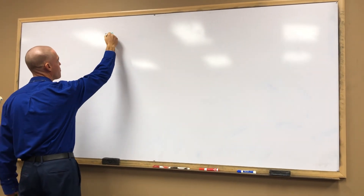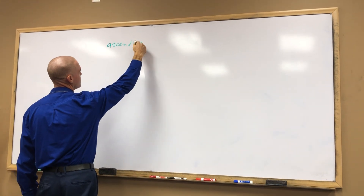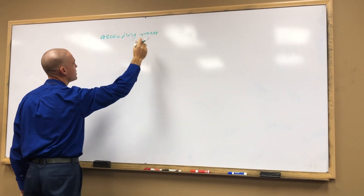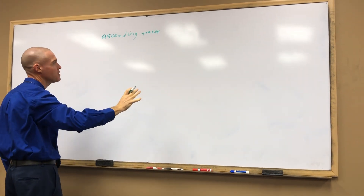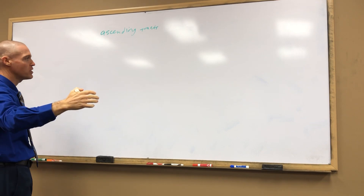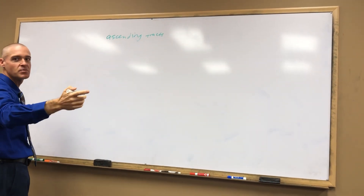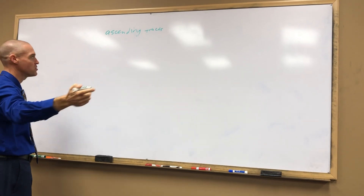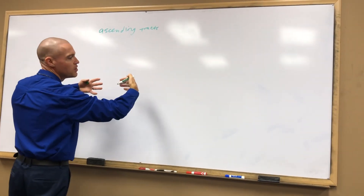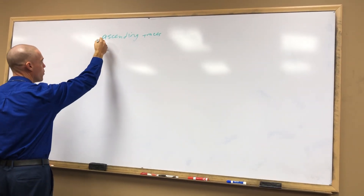This is going to be our ascending pathway first — ascending tracts. So which direction is this going to be going? What type of information is this going to be? It's going to be sensory information. We're going to be covering information going in to the spinal cord and then up to the brain.